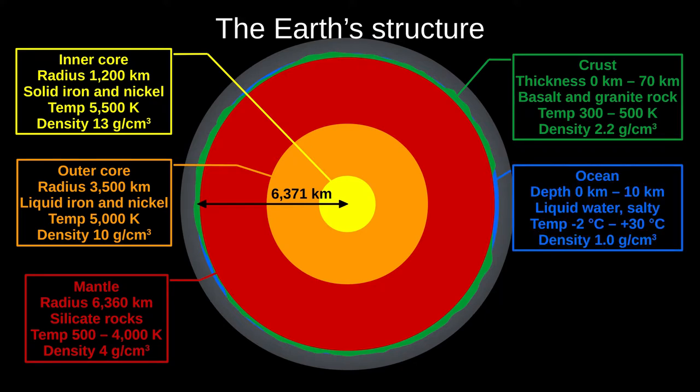About 70% of the crust is covered by ocean, up to 10 kilometres deep and made of salt water. In degrees Celsius this time, temperatures range from minus 2 to plus 30 degrees Celsius. Remember, you can convert degrees Celsius to Kelvin by adding 273.